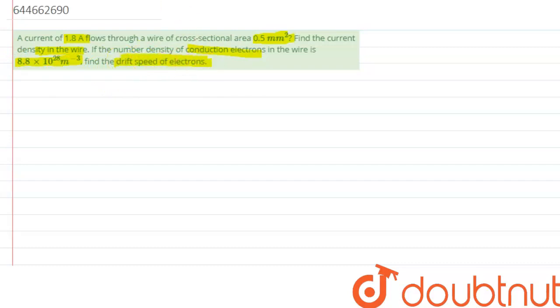So in the first part, we have to calculate the current density. We know current density, denoted by J, is nothing but current passing through a uniform cross-sectional area.